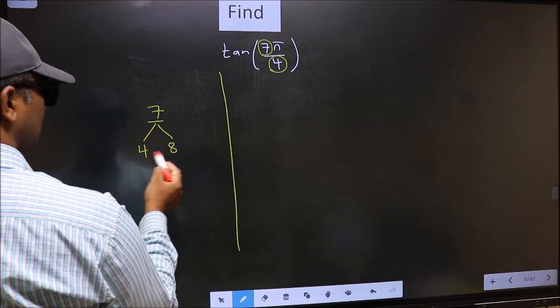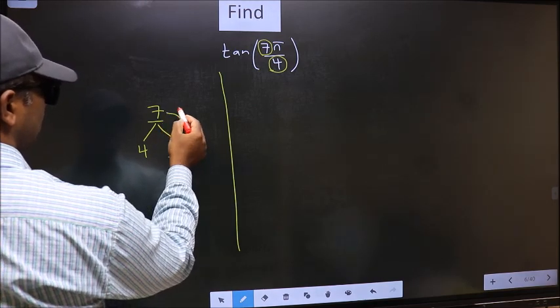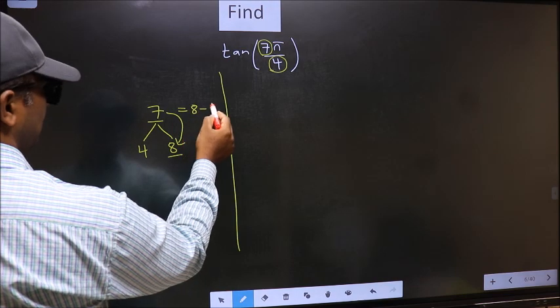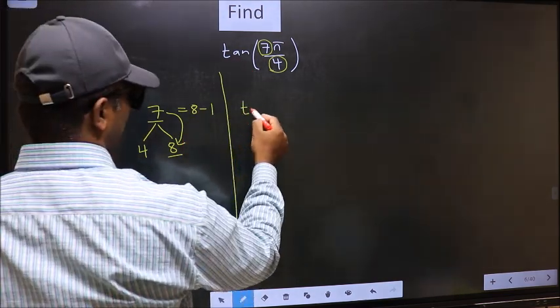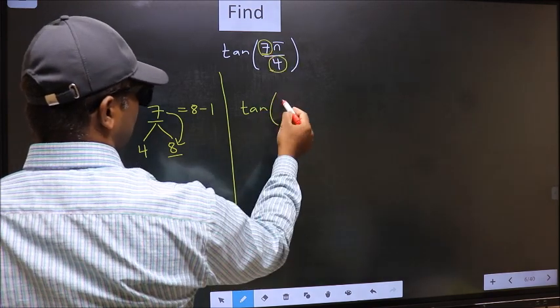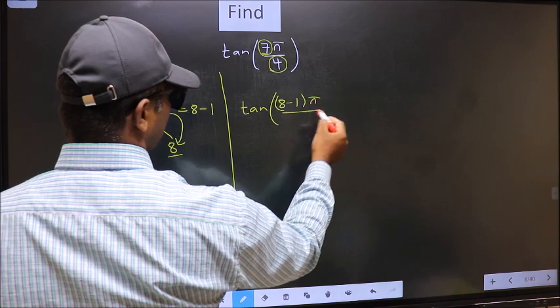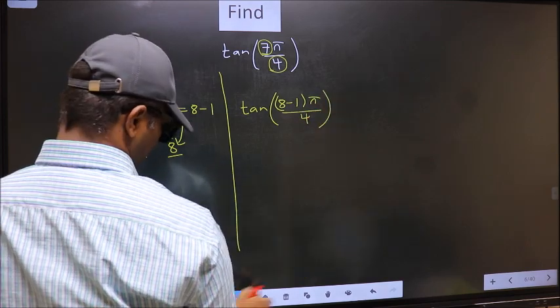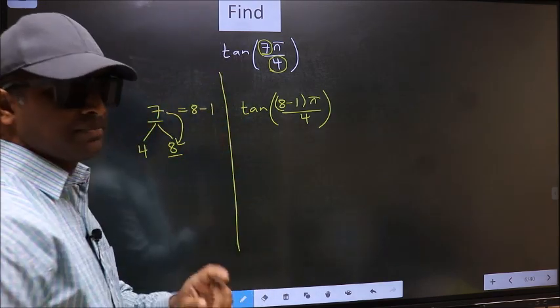Now 7 is close to which number? This is close to 8. So now 7 should be written as 8 minus 1. So this will become tan. In place of 7 now you should write (8-1)π/4. This is your step 1.